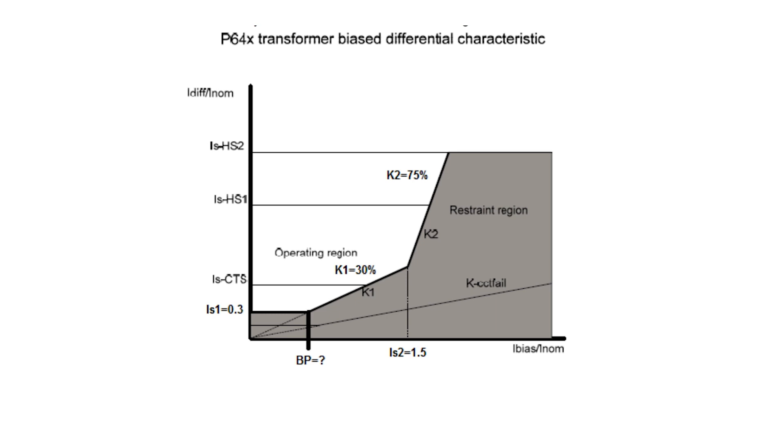To verify the slope characteristics, we need to divide this test case into three segments. The first segment is the zero slope minimum pickup characteristics. The second segment is the slope 1 characteristics. The third segment is the slope 2 characteristics.